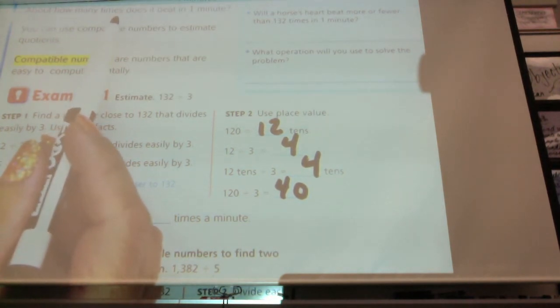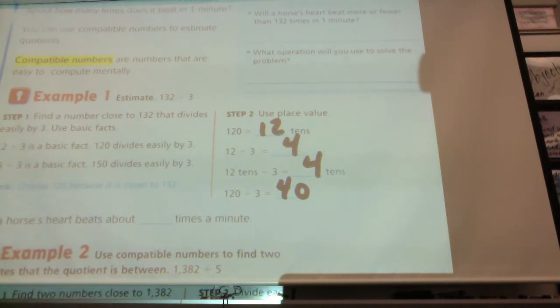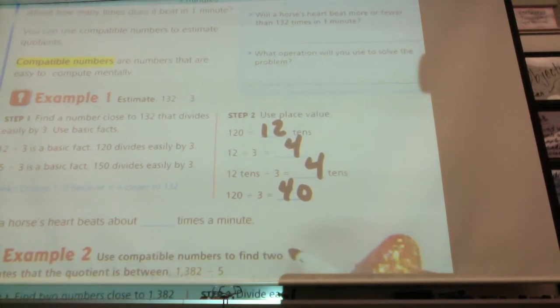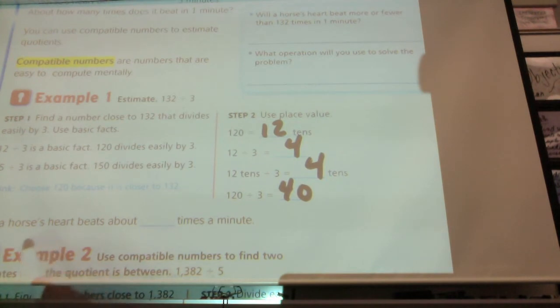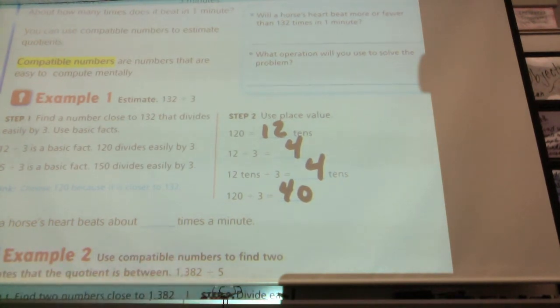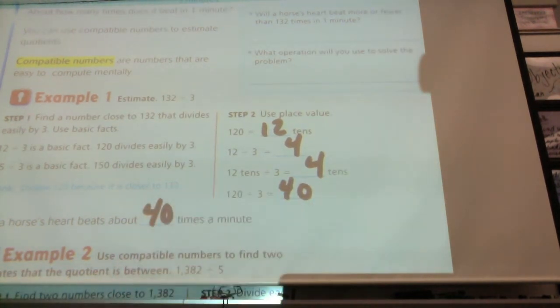So we didn't round it to the nearest number to make it easy to divide by, but we used a compatible number. We used a compatible number, so it's a number that's close, but it's not a rounding. So a horse's heartbeat beats about 40 times per minute.